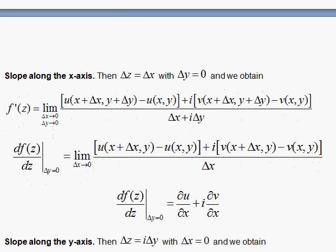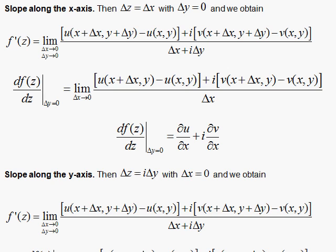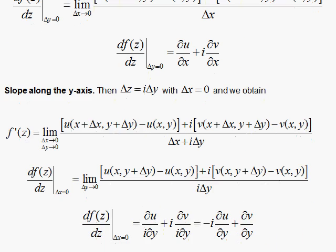Now we consider the slope along the y-axis. And along the y-axis, we have delta x equal to 0. So all of the delta x's now go away. And we're left with, in the denominator, i delta y. So here we have the partial of u with respect to y. And there's an i down there in the denominator hanging around. And then over here, we have i times the partial of v with respect to y. With the i still hanging around in that denominator, you'll see that the i's cancel for the second term. And here, if I multiply top and bottom by i, I get minus i, the partial of u with respect to y. And here I have a plus the partial of v with respect to y.